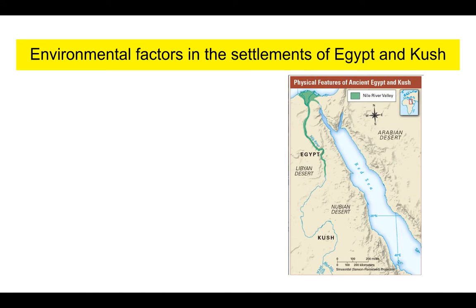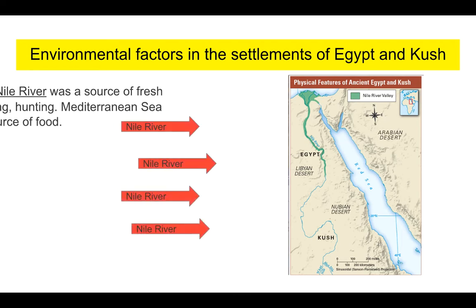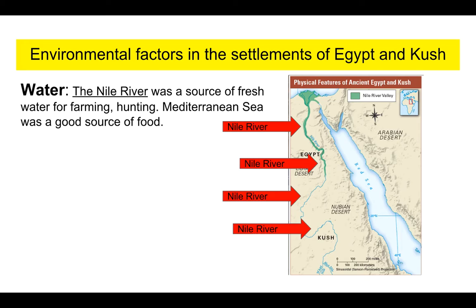Let's go through real quick the environmental factors of Egypt and Kush. When we talk about water, we're talking about the Nile River — that's where most people settled. It was a great fresh water source, good for farming and a lot of hunting. The plains on the banks of the Nile River were the areas where most farming and settlement occurred. The Mediterranean Sea up near the Nile River Delta was also a good source of food in terms of fishing.